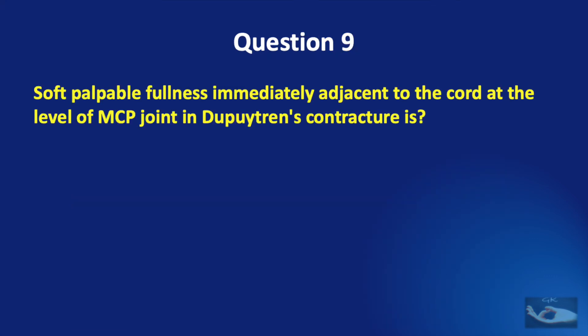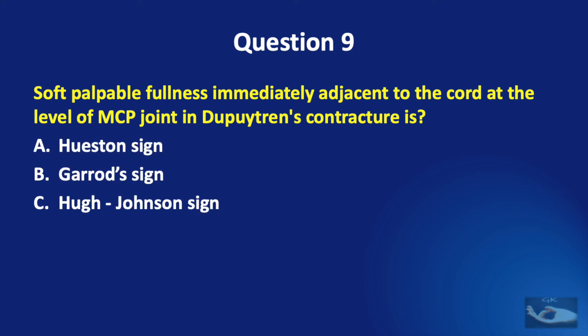Question number nine. A soft, palpable fullness immediately adjacent to the cord at the level of the metacarpophalangeal joint in Dupuytren's contracture is: the Houston sign, the Garrard sign, the Hugh-Johnson sign, or the Short-Watson sign?